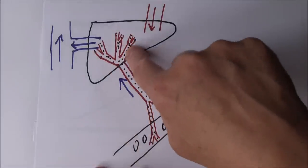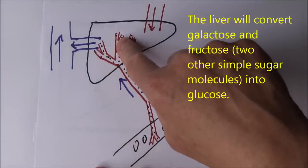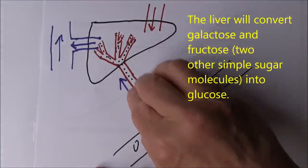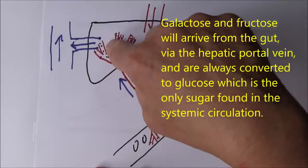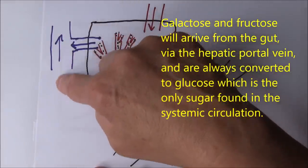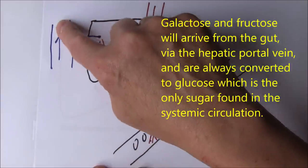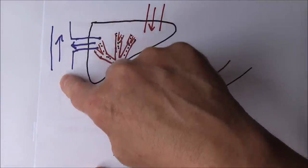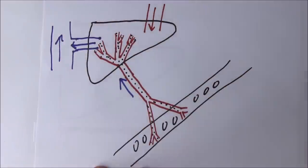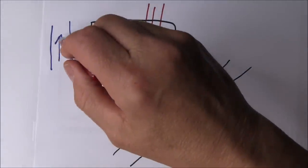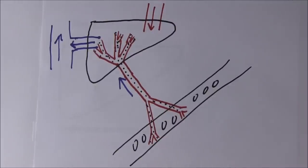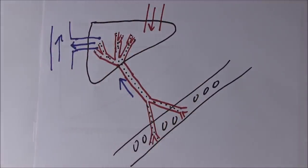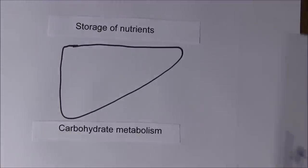If fructose or galactose arrive in the liver, the liver will convert those to glucose. Even though fructose and galactose are arriving, the blood draining from the liver will contain glucose. Glucose is the only monosaccharide we find in the blood. At work I talk about blood sugar, but it's a bit sloppy. We should really be talking about blood glucose, because the sugar in the blood is always glucose.